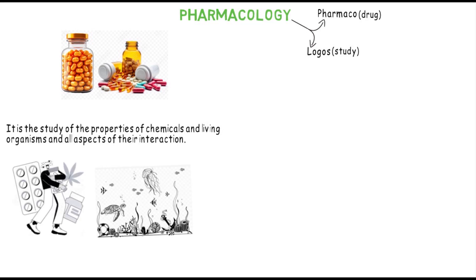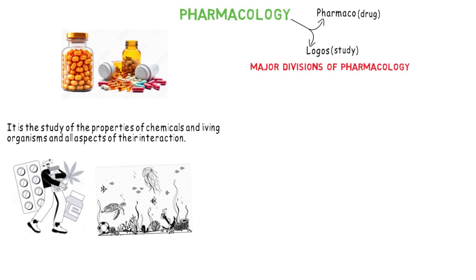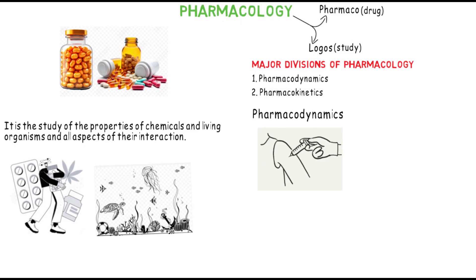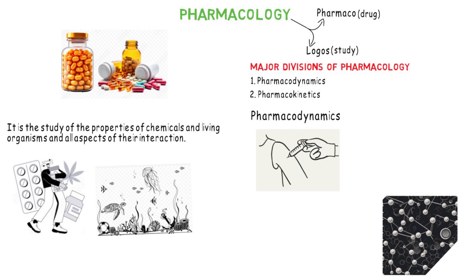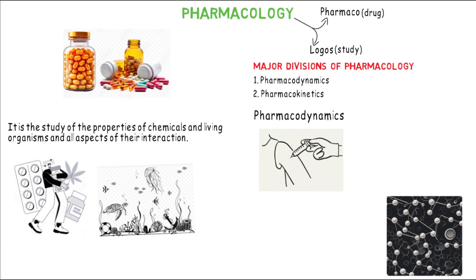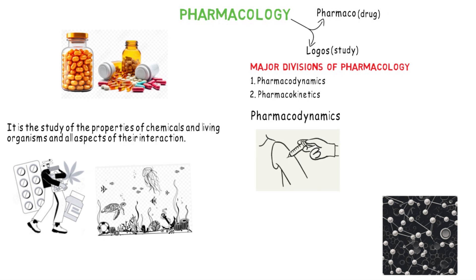Pharmacology also deals with the effects of chemical substances on living organisms. It has been carefully divided into two major parts — and take note of 'major,' because there are other parts, but we'll be looking at the major ones. These two major parts are pharmacodynamics and pharmacokinetics. Pharmacodynamics deals with the actions of drugs on the body, their mechanisms of action, how they bind to receptors, and the resulting physiological or biochemical effects of these drugs.